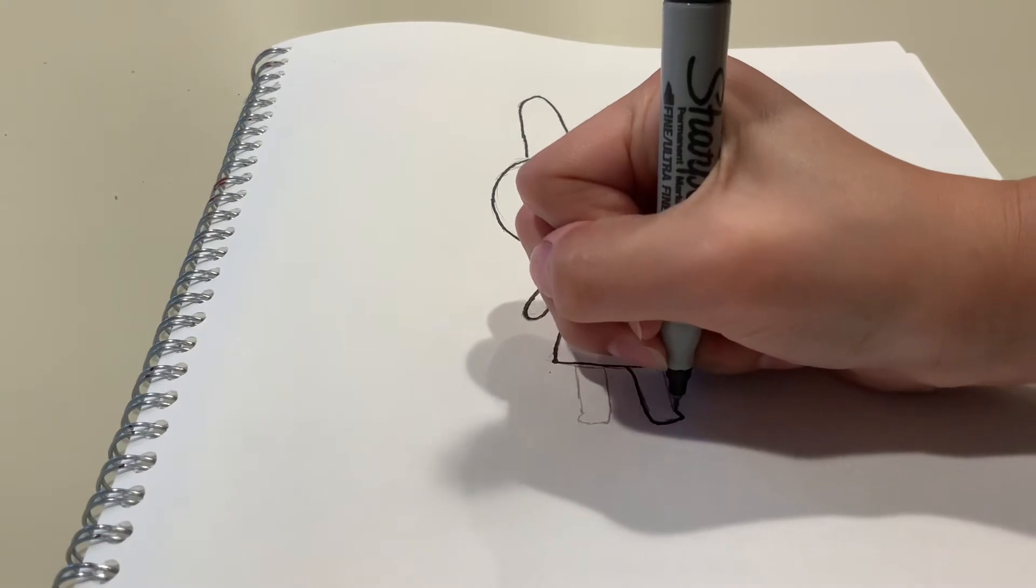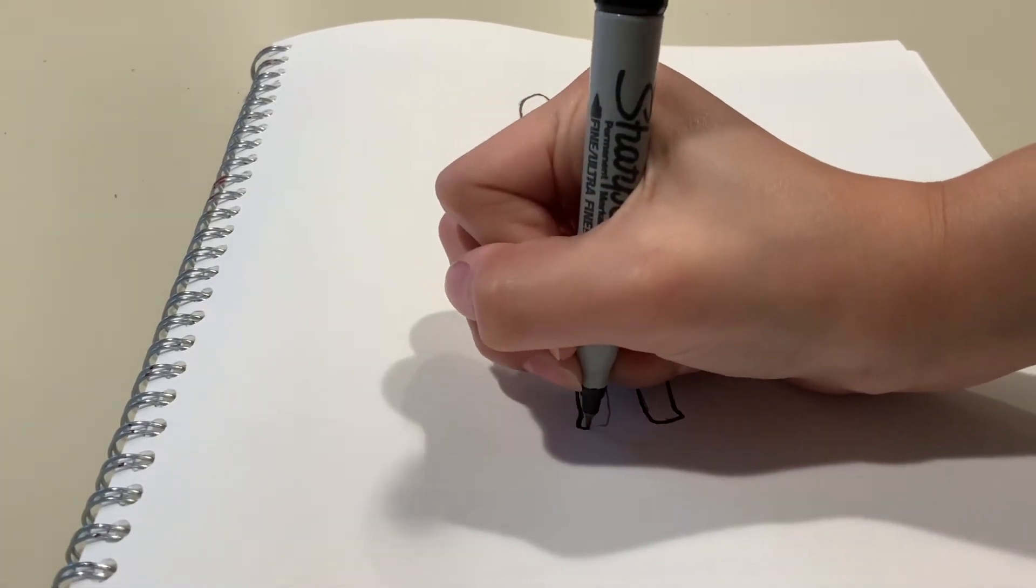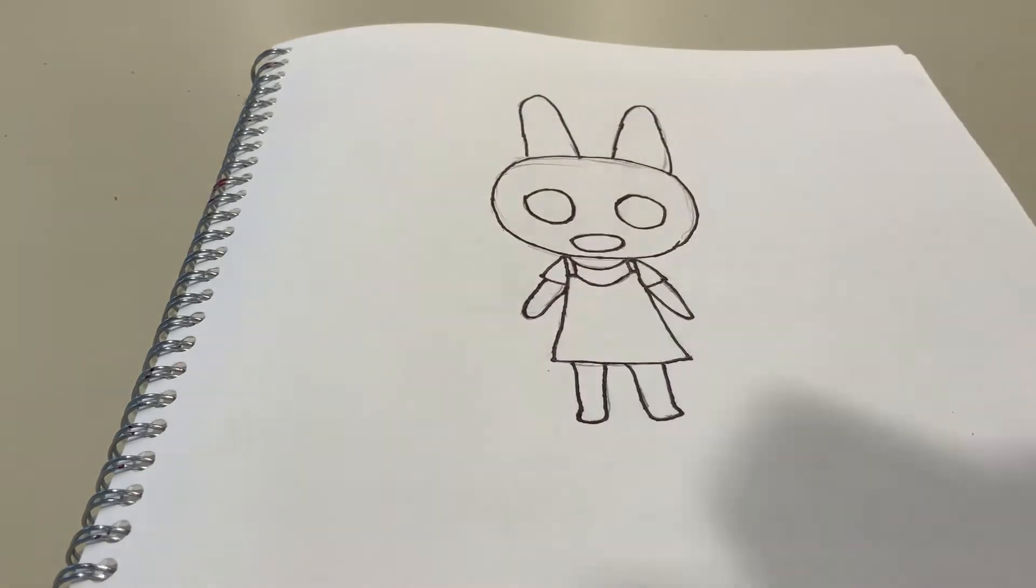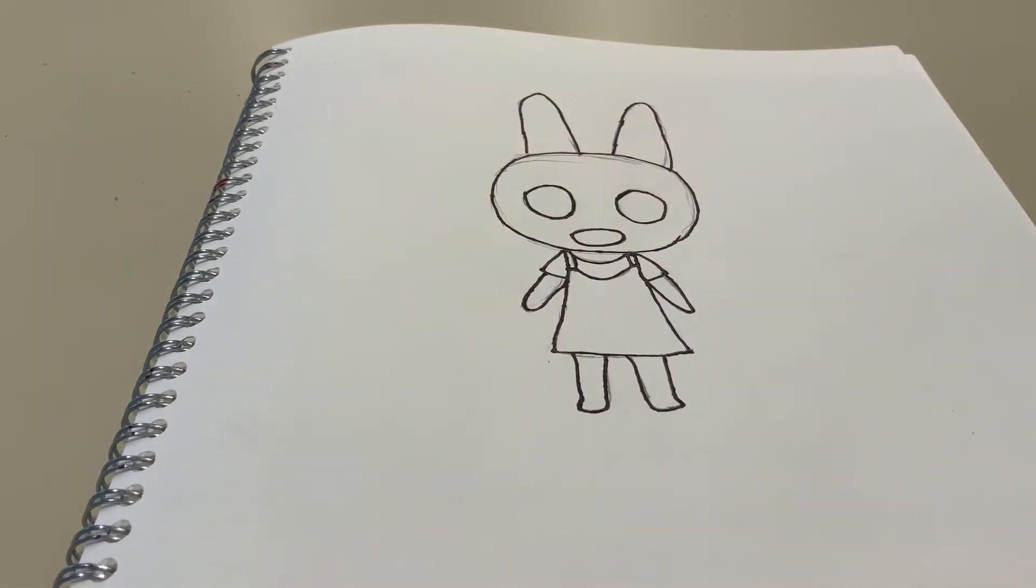So right now I'm tracing her legs, and then I'm going to go ahead and start erasing, so that way there isn't any pencil lines.